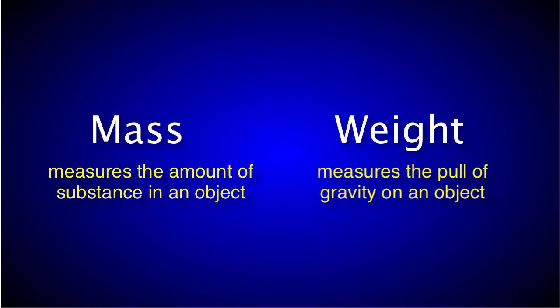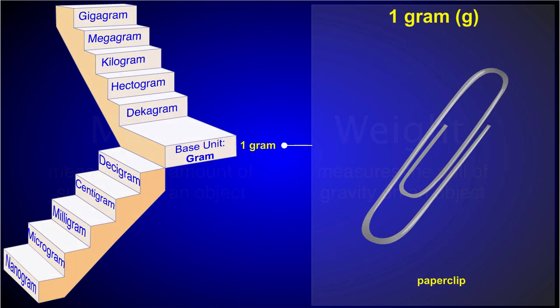But, as long as you're planning on only measuring objects on Earth, you can pretty much use the terms mass and weight interchangeably. For instance, a paperclip on Earth typically weighs about 1 gram. It also has the mass of 1 gram.